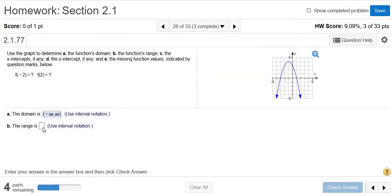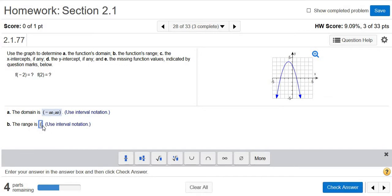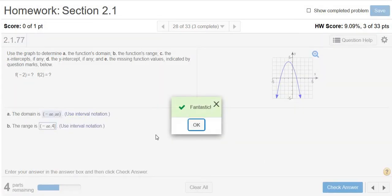So negative infinity all the way to 4. So let's see, parentheses, negative infinity, comma, 4. And we want to use a bracket because it's including that y-value. Let's try it. All right, got it right.